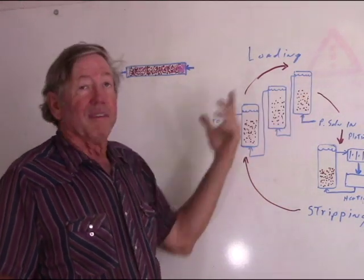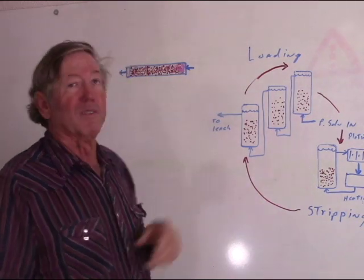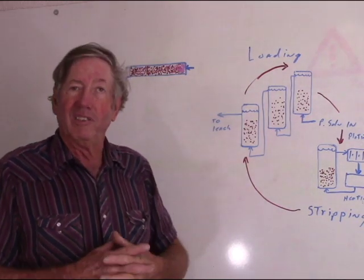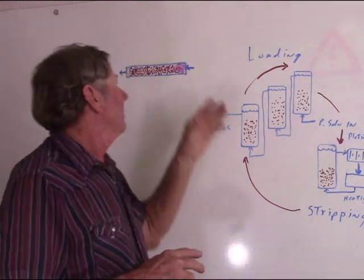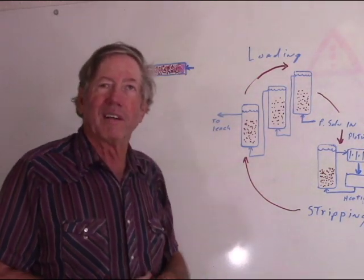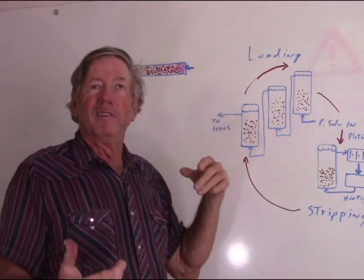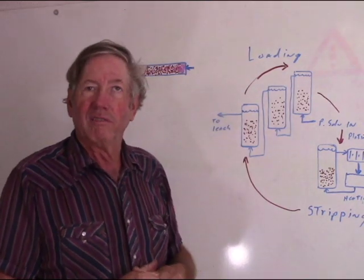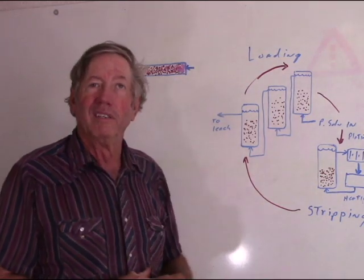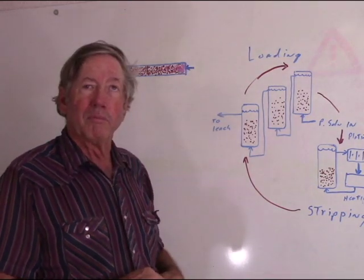This is more suitable for a small-scale operation in general. At micro-scale you'd probably have like two columns — one to load and one to scavenge — and you just circulate it through until it was pretty well stripped.